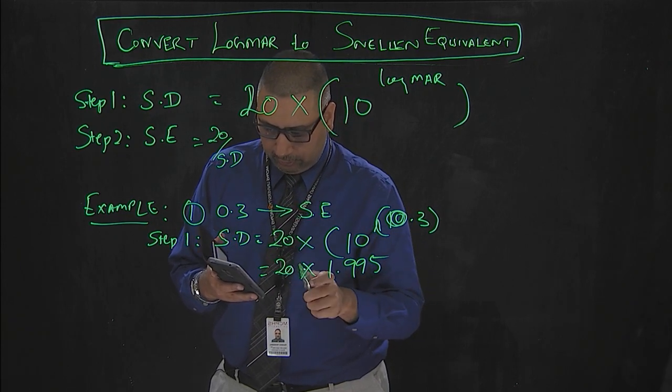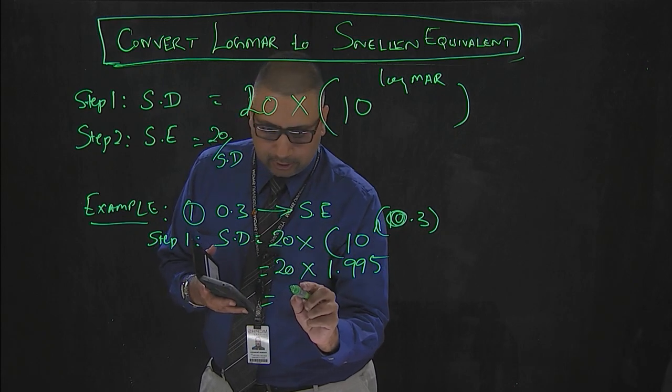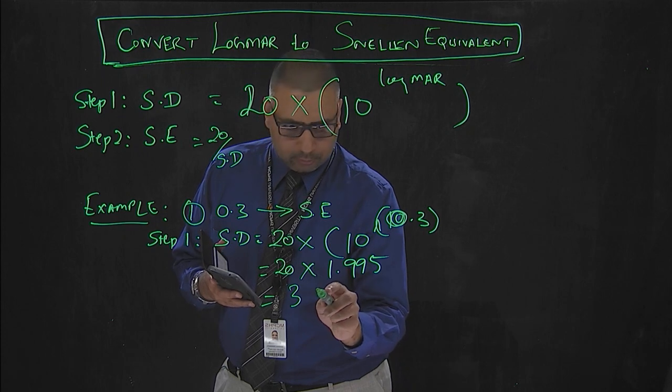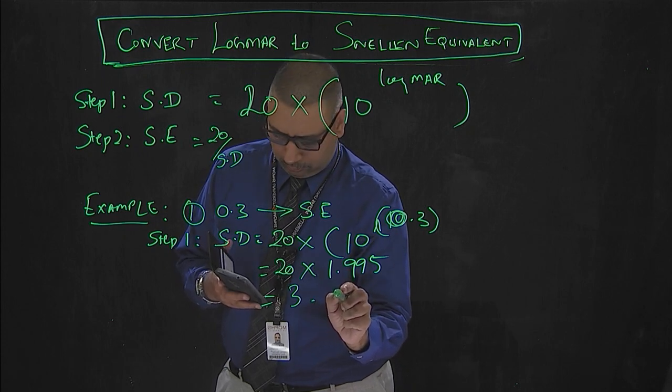If you multiply by 20 you will get that as 39.9.